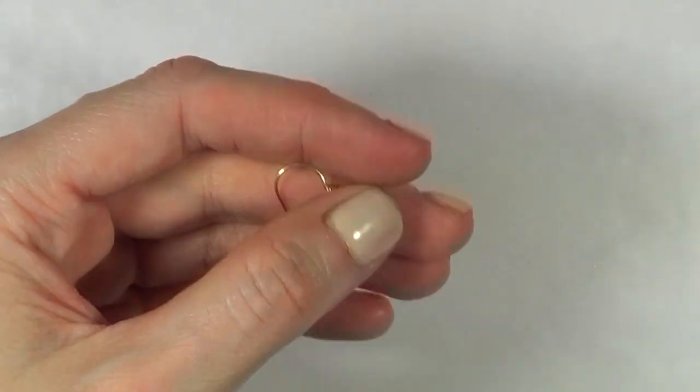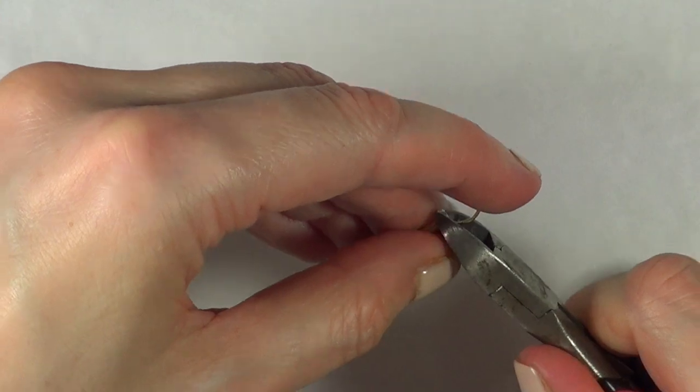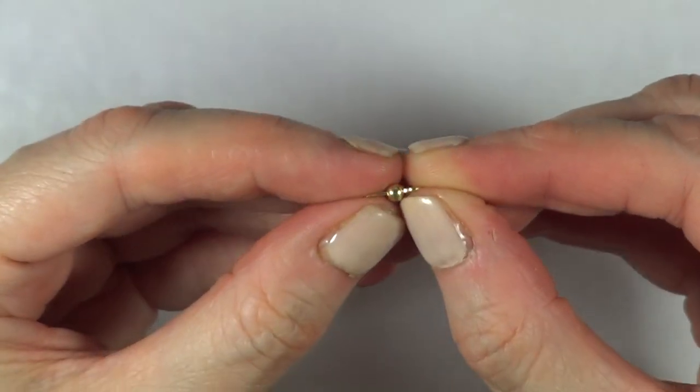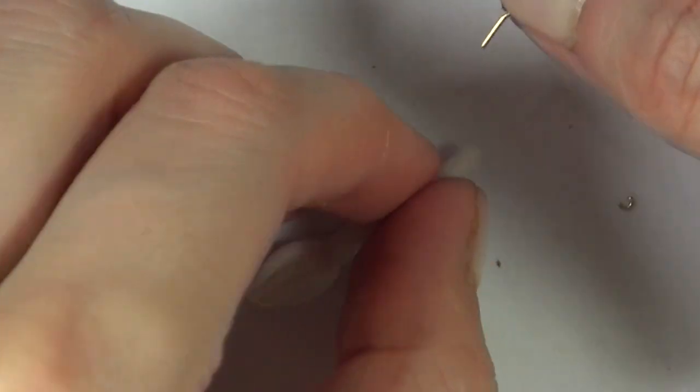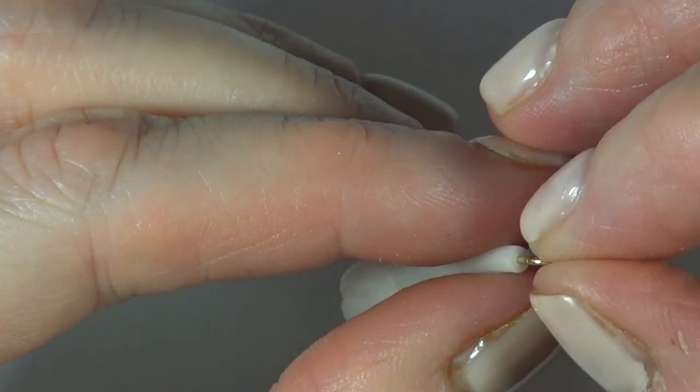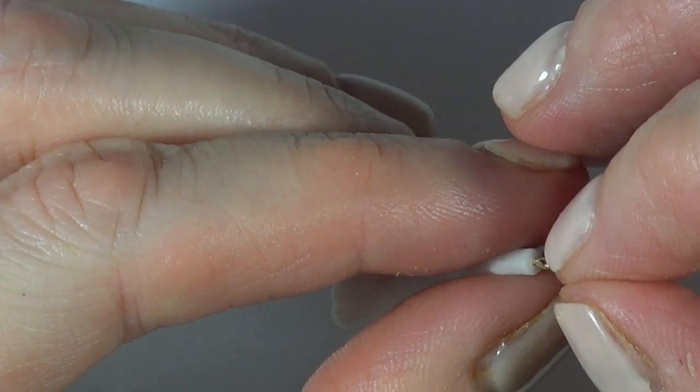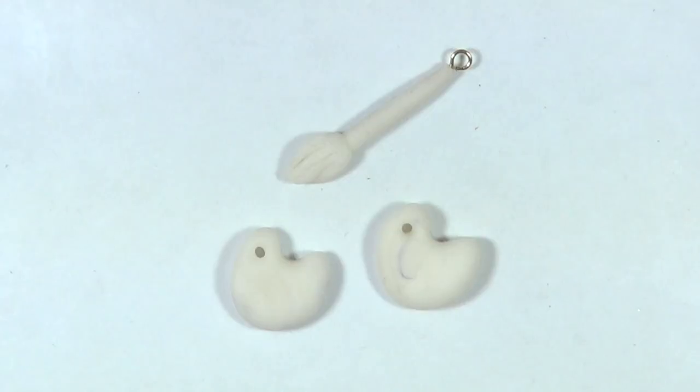I'm going to be using two ear wires for this. For this one, I'm going to cut this end part. If you have some eye pins, use those instead. I didn't have them. That's why I had to use an ear wire for this. I'm just going to be putting this on the end of the brush and I'm just going to bake them following the instructions of my polymer clay package.